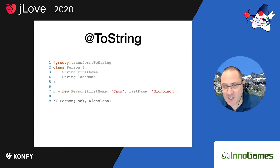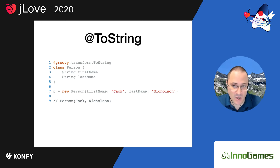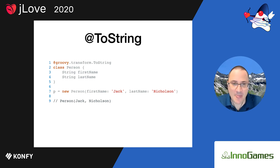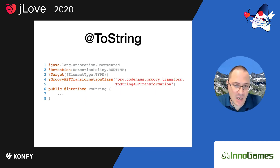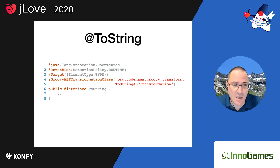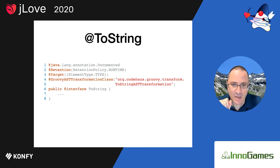You can customize this by passing additional parameters to ToString — to print property names, or to exclude or include any properties. If you were to define something like this, you need an annotation. The annotation name is ToString, which is just like any regular annotation — you can even write it in Java. On line 4, the @GroovyASTTransformationClass annotation links the entry point annotation to the actual AST transformation implementation.